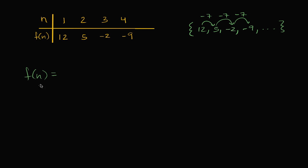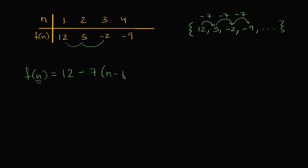Let's think about it. We're starting at 12 for the first term, and then we're going to subtract seven some number of times. For the first term, we subtract seven zero times, so we just get 12. For the second term, we subtract seven once. For the third term, we subtract seven twice. For the fourth term, we subtract seven three times. So it looks like whatever term we're on, we're subtracting seven n minus one times.